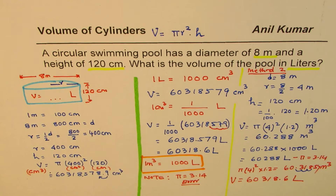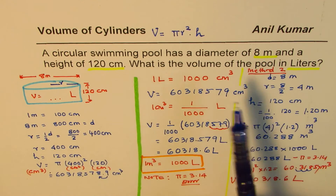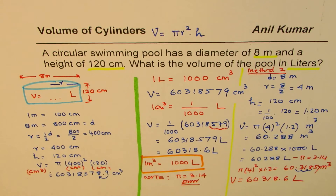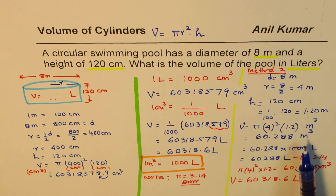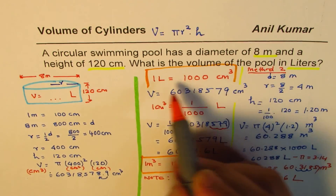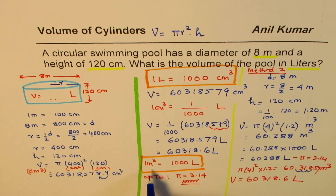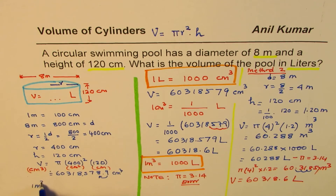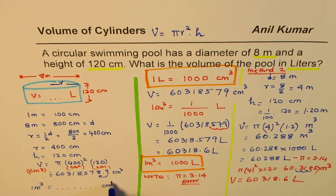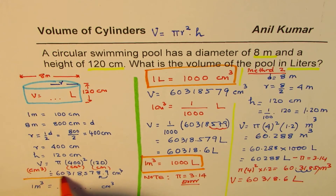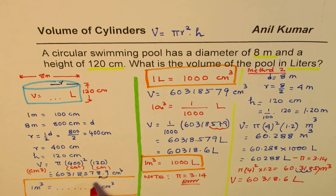In this video we have understood how to convert units from meters to centimeters, find the volume in centimeter cube or meter cube, and then convert to liters. The two formulas applied here are: 1 liter is 1,000 centimeter cube, and 1 meter cube is 1,000 liters. Now here is a question for you: 1 meter cube equals how many centimeter cube? You can write down the answer in the comments.